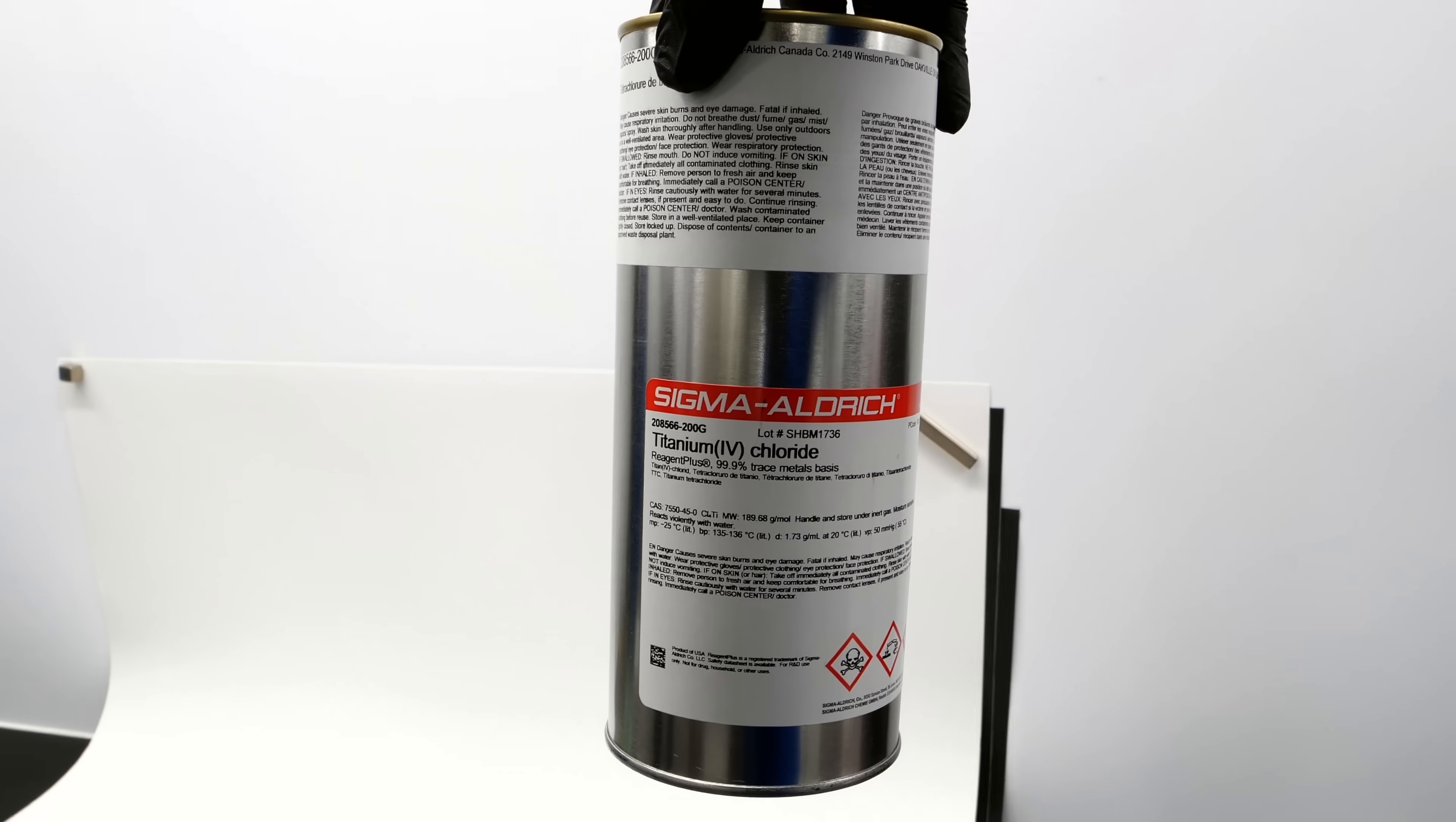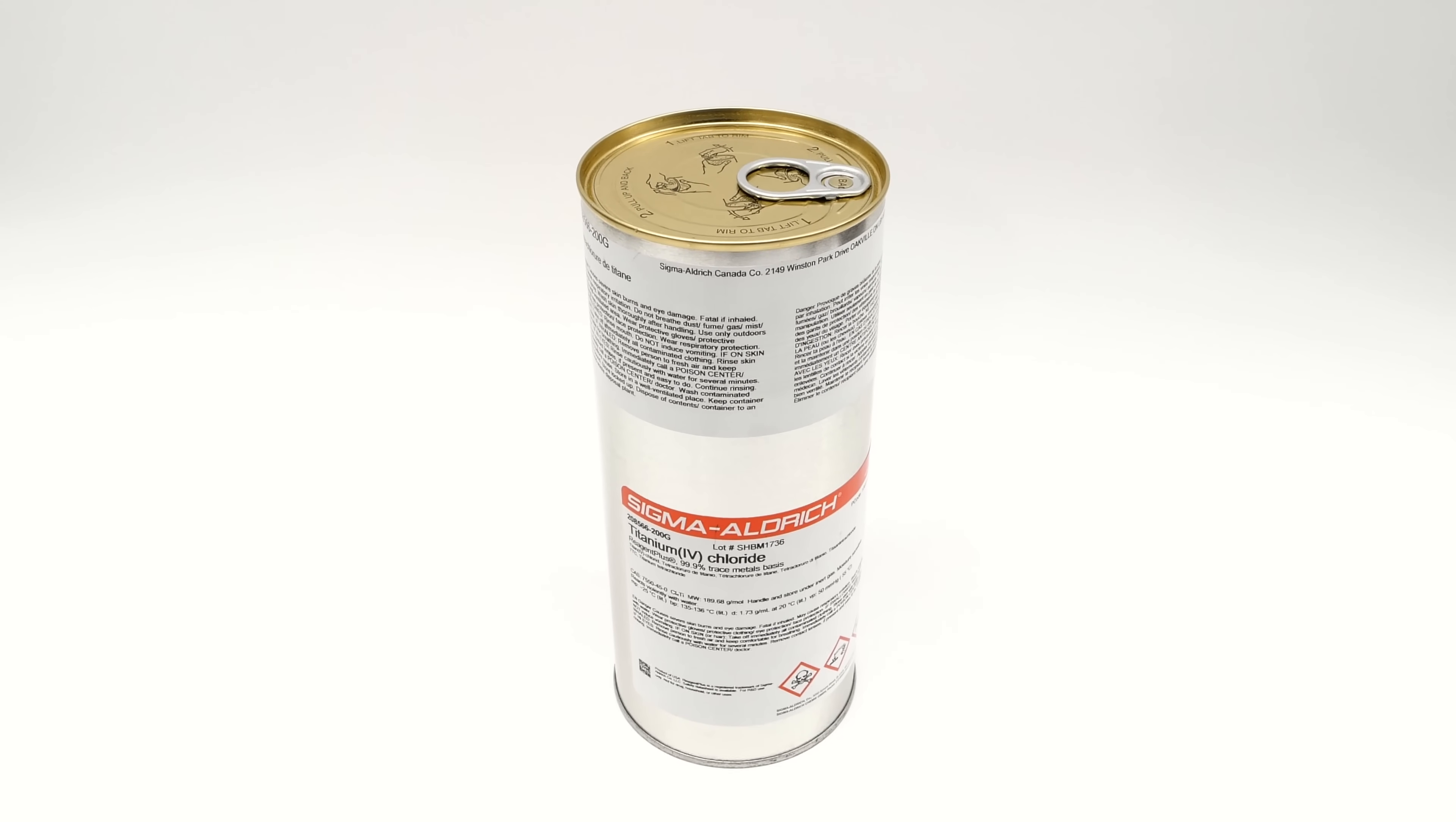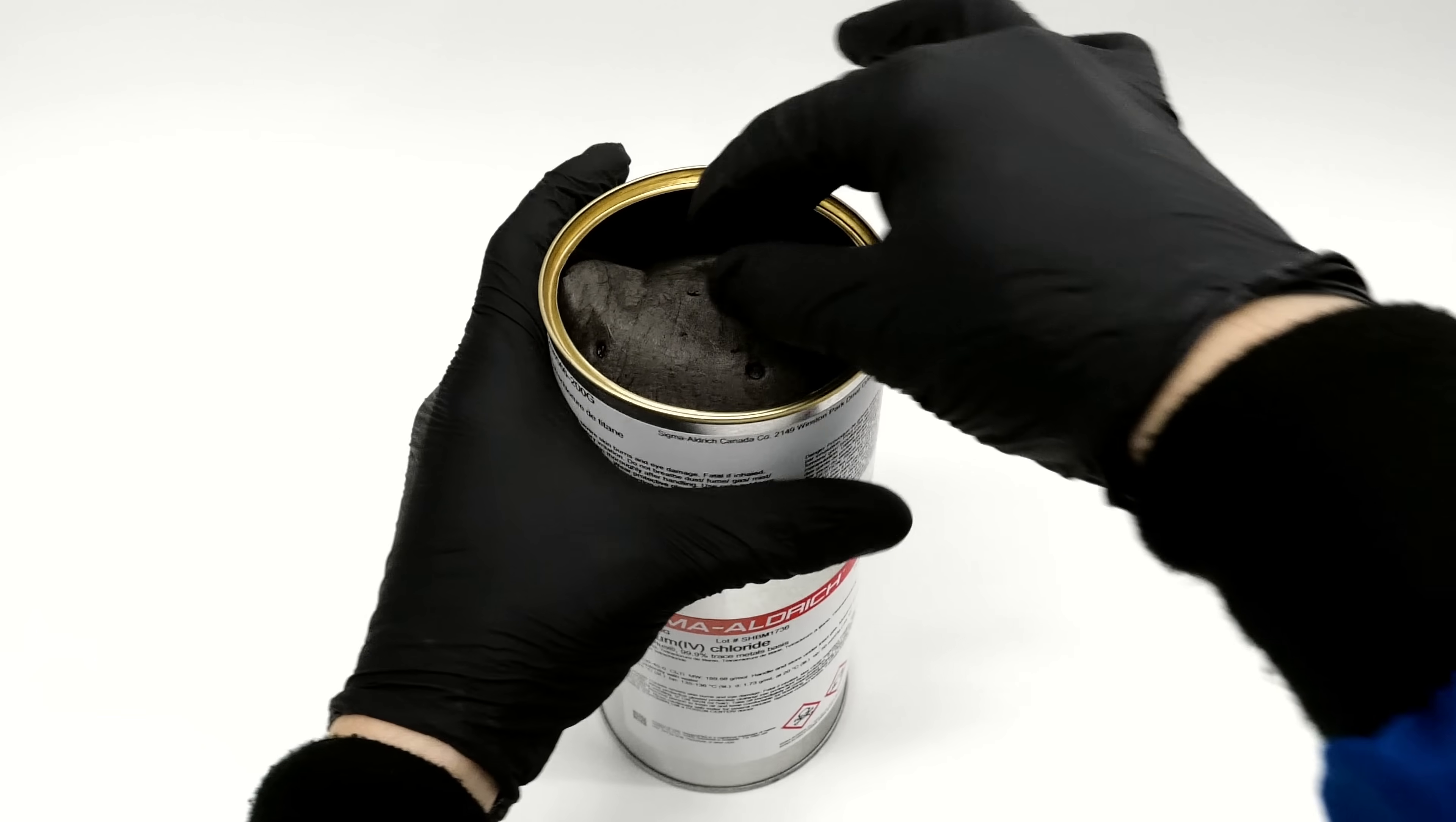A few weeks ago, I bought some titanium tetrachloride, which I heard is one of the most obnoxious chemicals. It came in this nice elongated tuna can, and it was wrapped up in a little blanket.